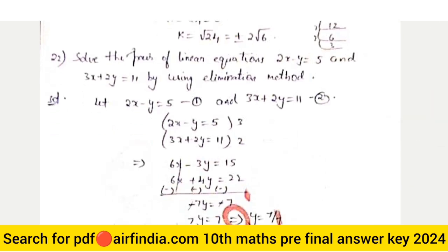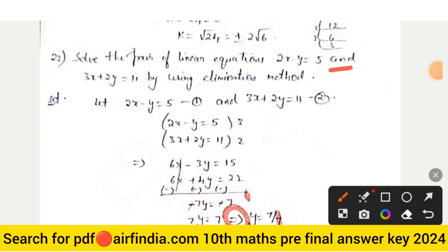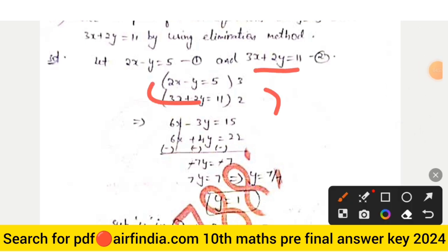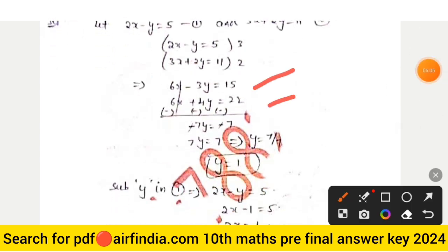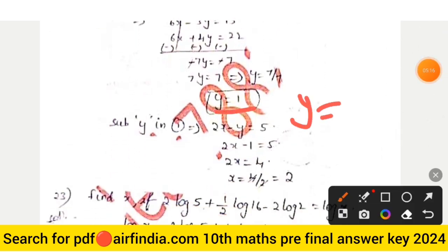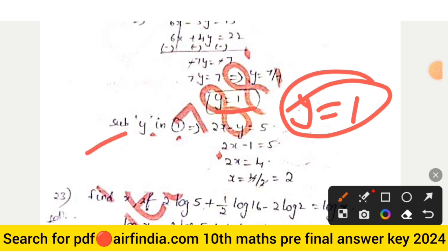Solve the pair of linear equations 2x − y = 5 and 3x + 2y = 0 by elimination method. Multiply the first equation by 3 and the second by 2, then subtract to get y = −1. Substituting y back into equation one gives x = 2.